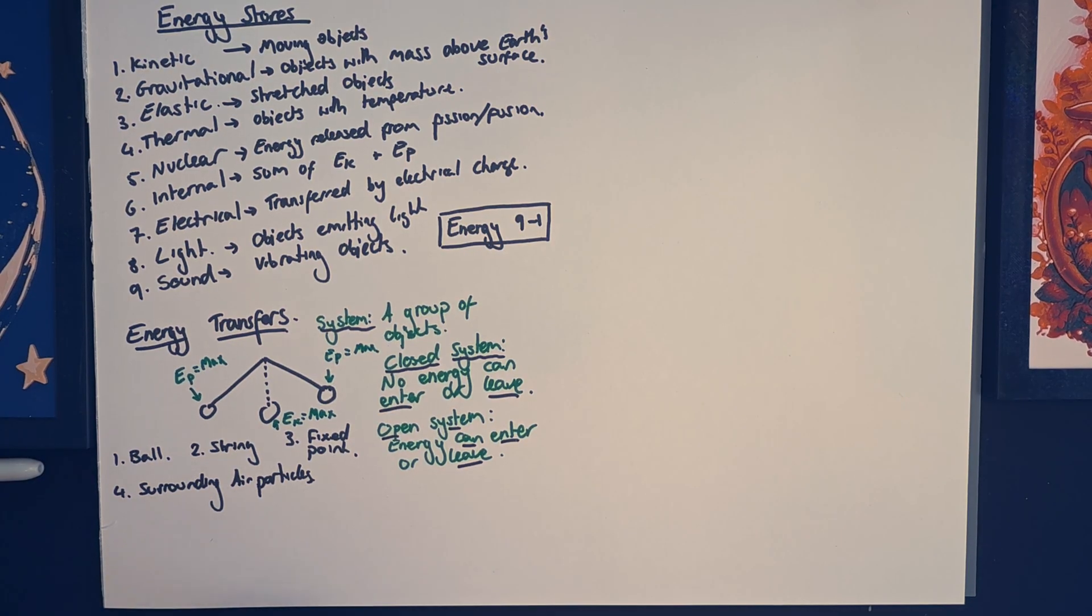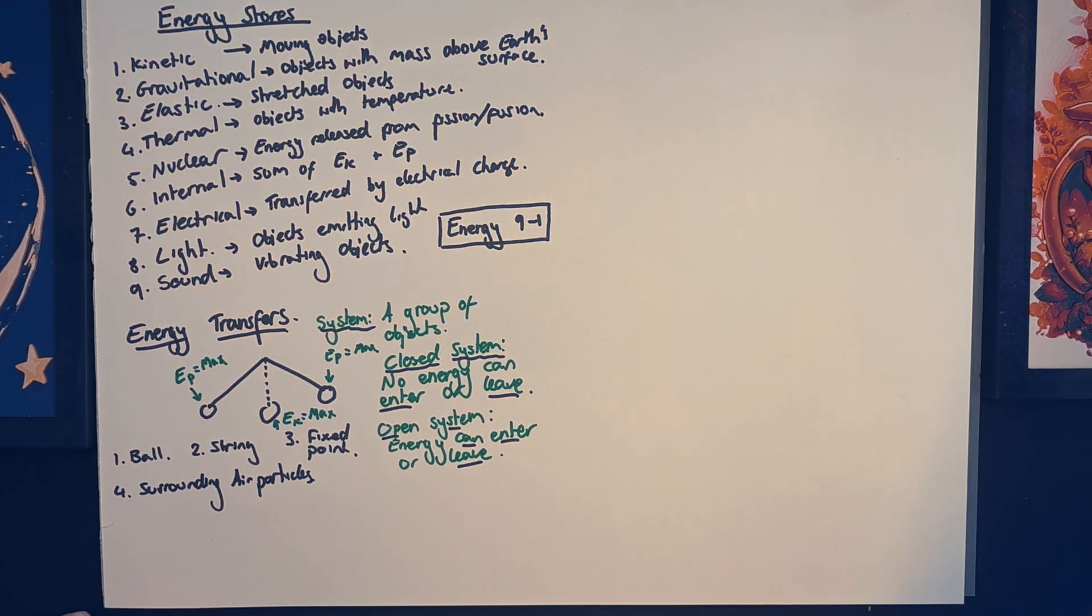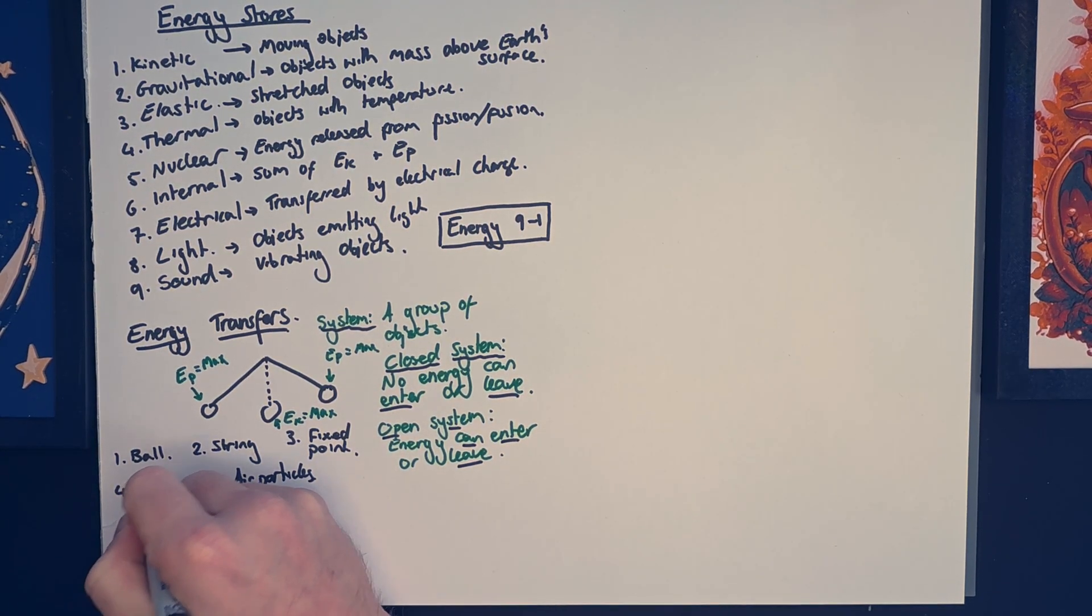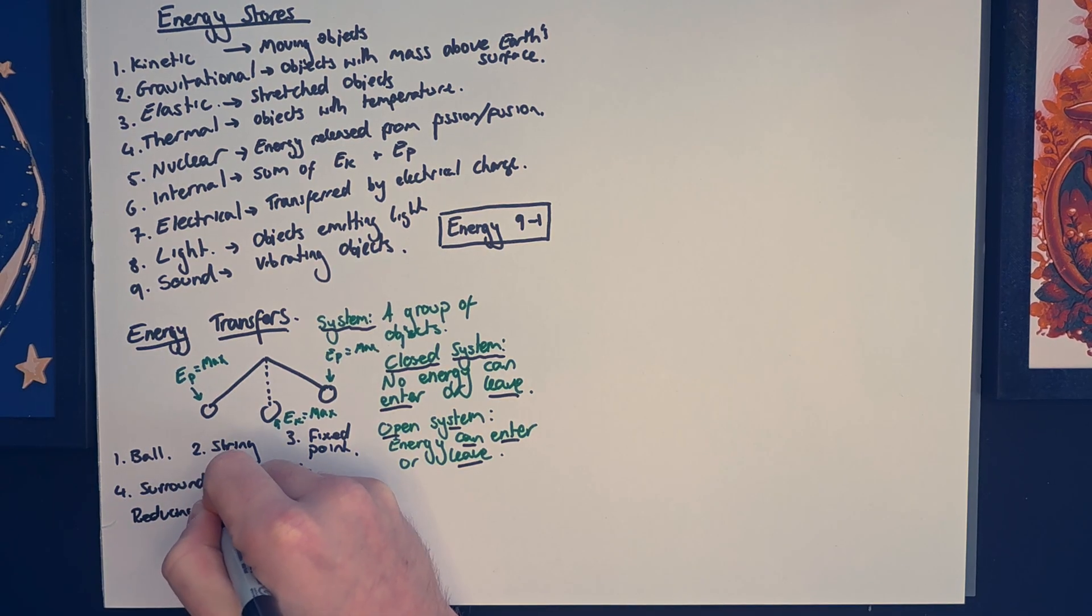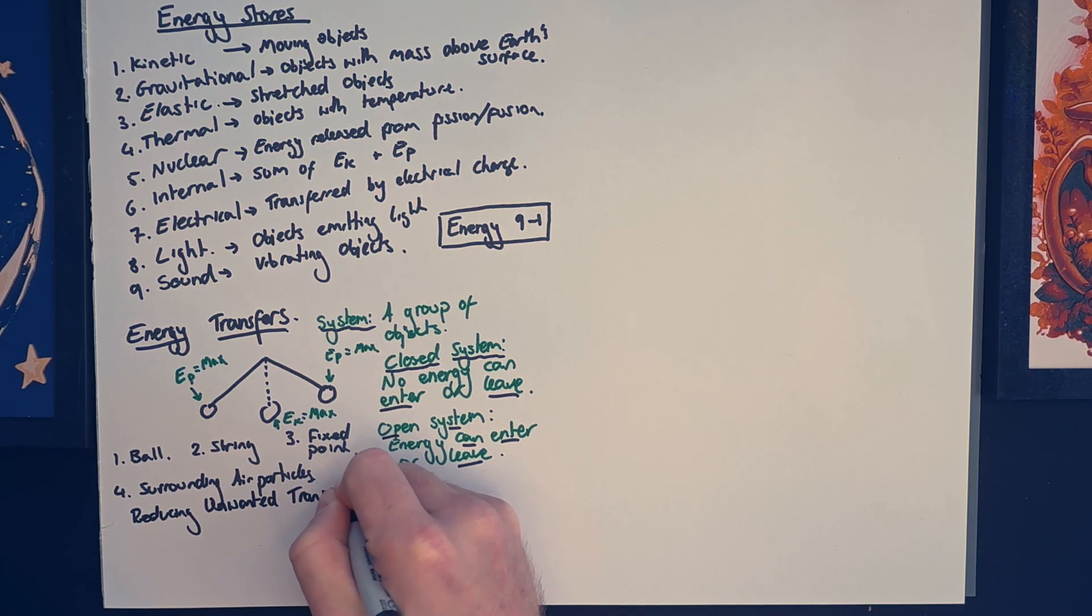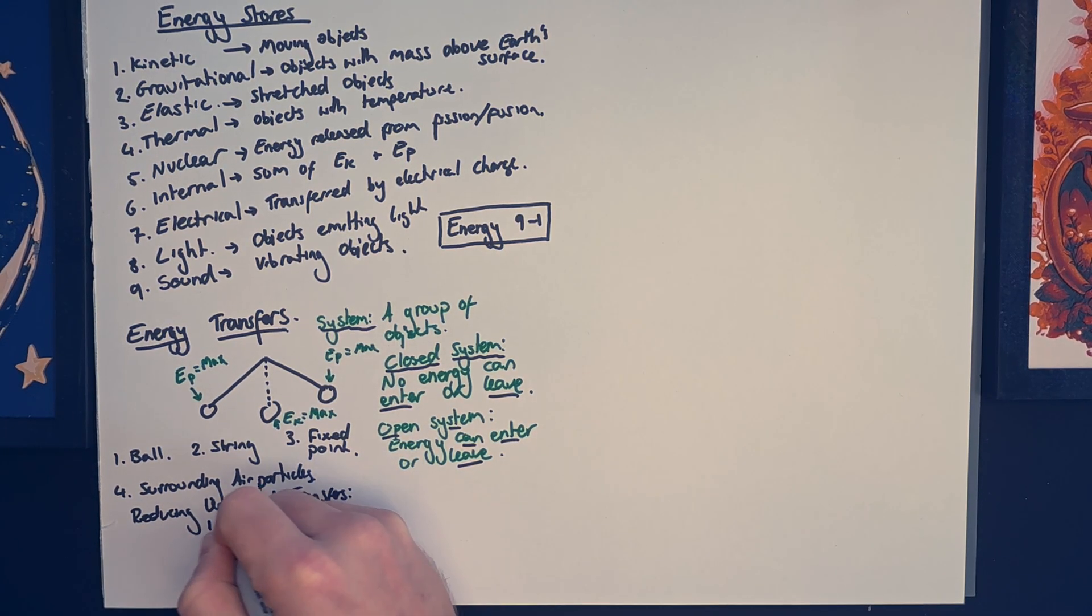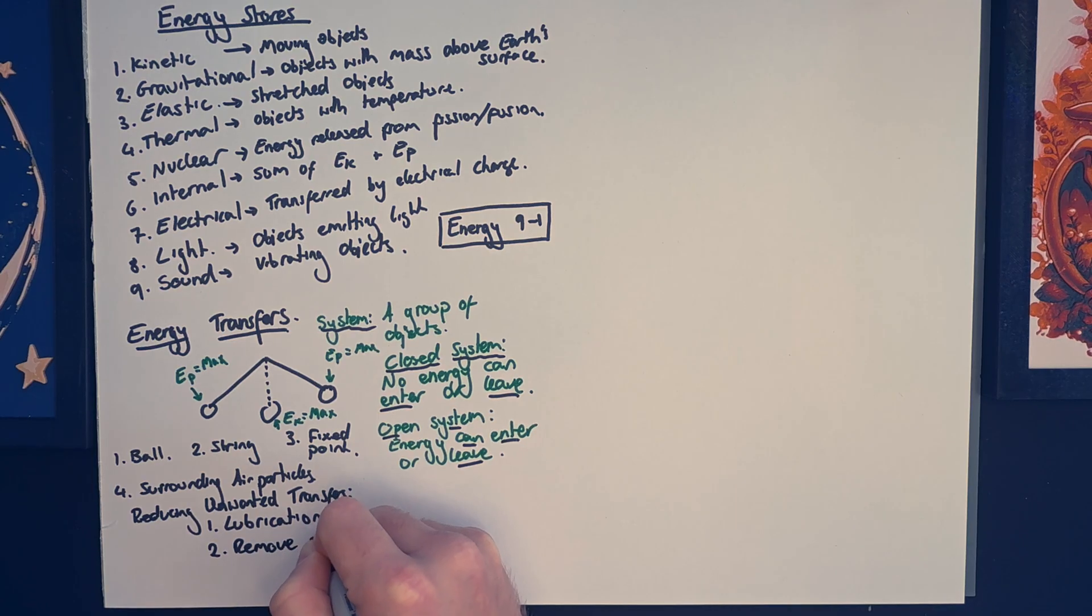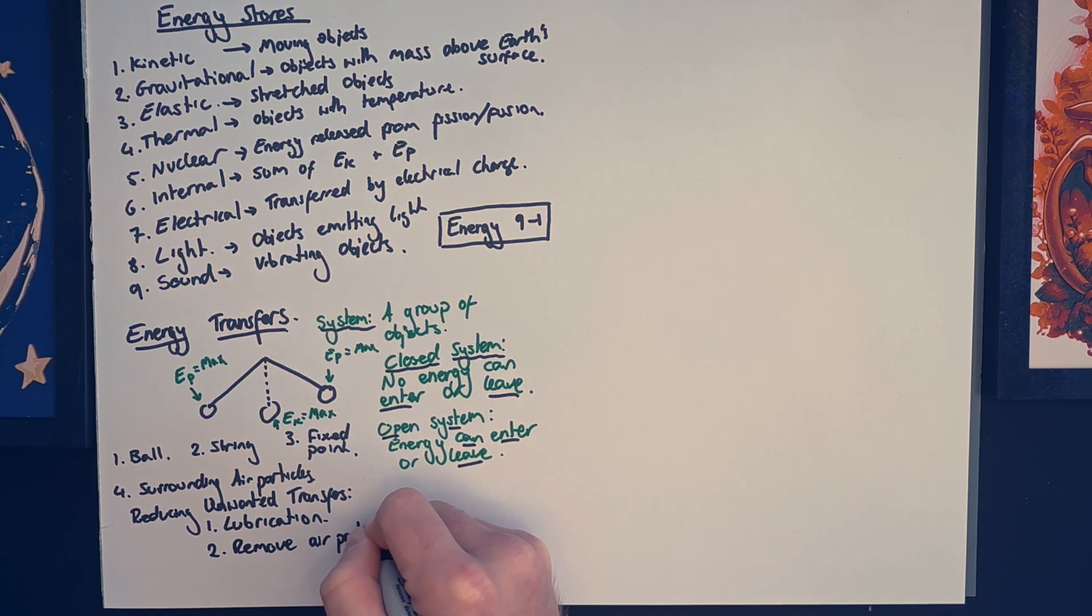Now it is absolutely worth noting that there is energy dissipation in this system. Energy can be dissipated due to friction happening at the fixed point, so the thermal energy generated will dissipate to the surroundings. We can minimize any unwanted energy transfers in the systems usually in one of two ways: by lubricating and by removing air particles. Removing air particles will minimize work done against friction from those air particles, and the same for lubrication. Remember, always mention about energy being stored, work being done against a force, and then finally if there is any thermal energy or sound energy, that is always dissipated. That's key exam language.